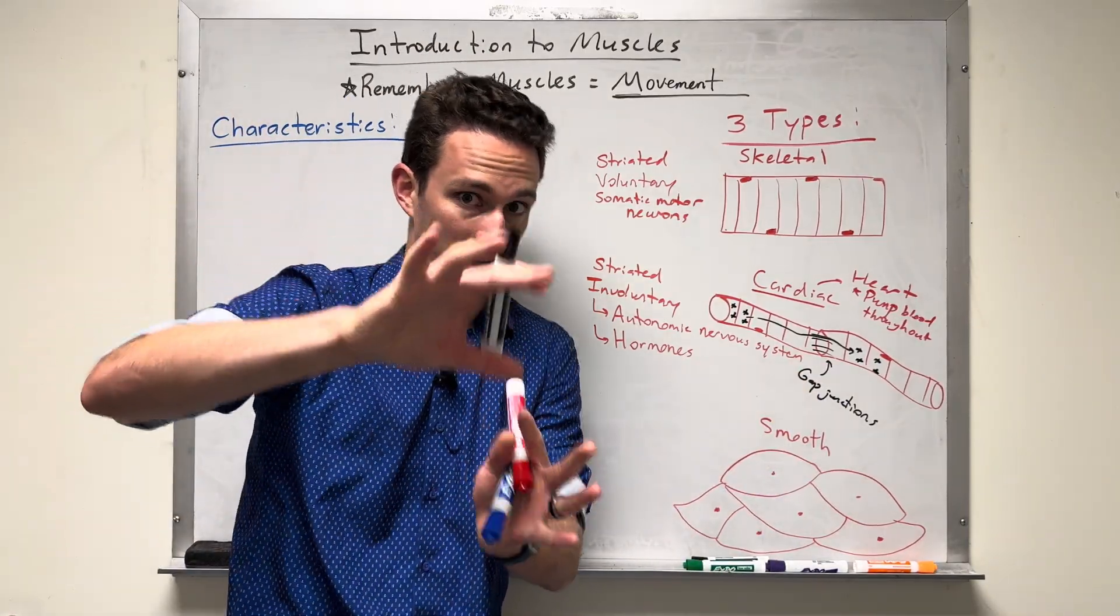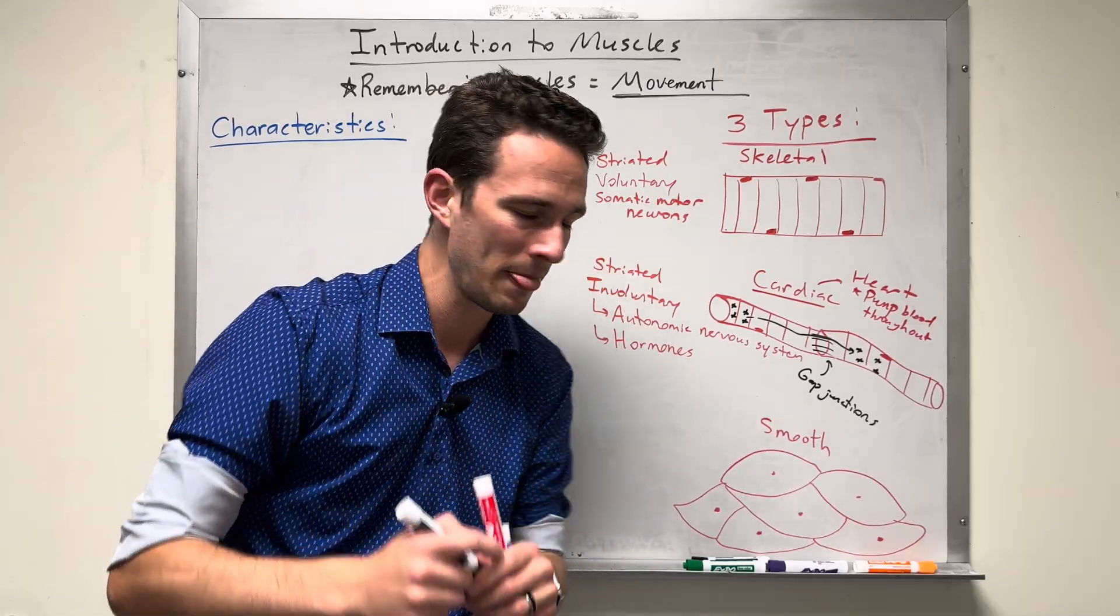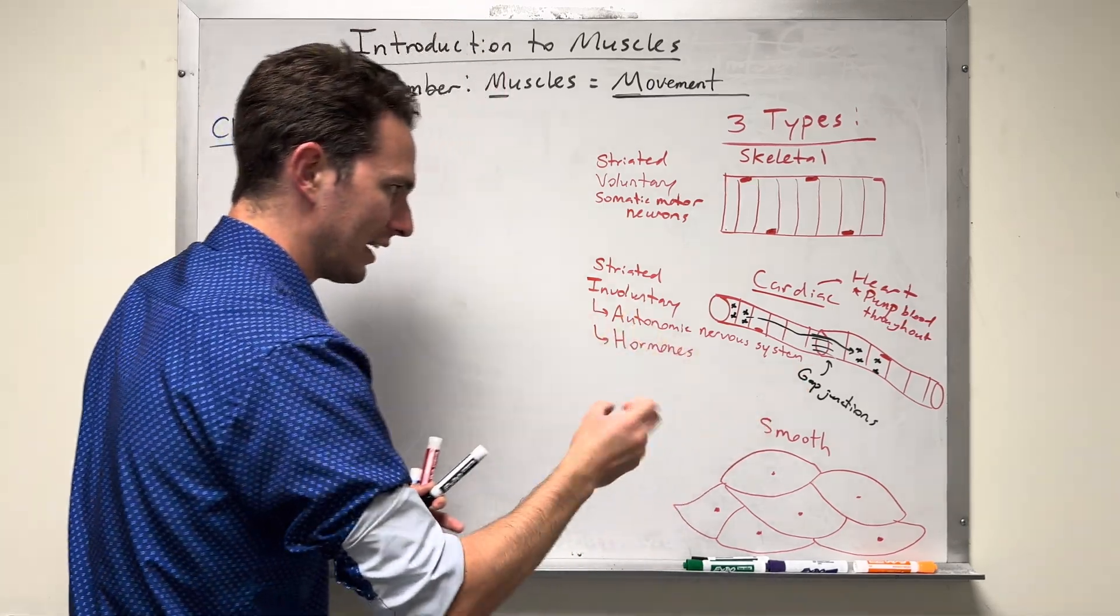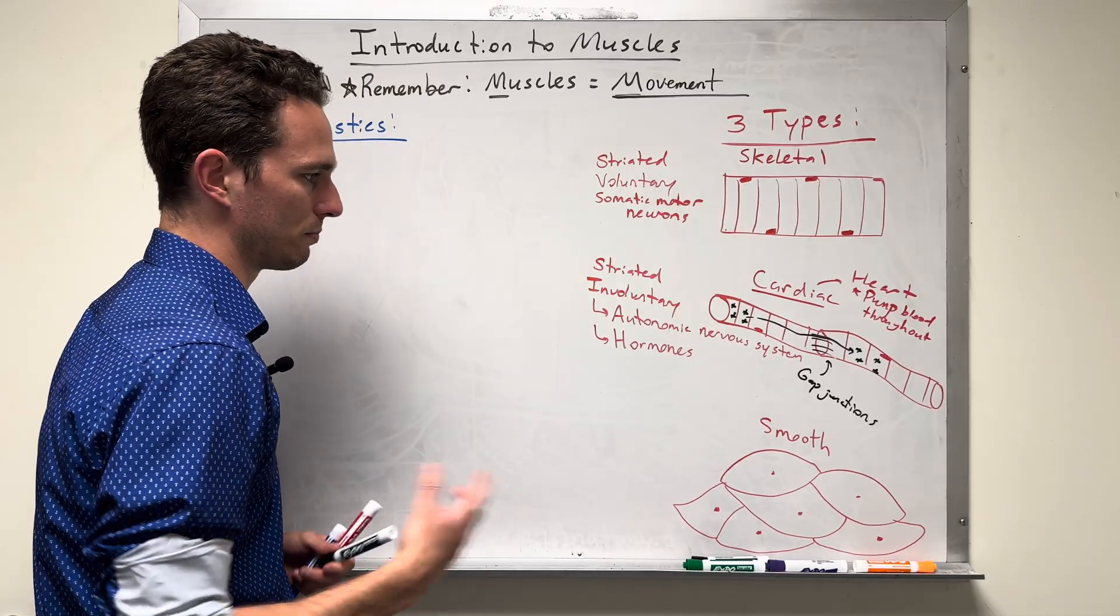That allows basically the entire heart muscle, whether atria or ventricle, to contract in a together manner, synchronously. So we call that autorhythmicity. Automatically beating, and we're beating the whole muscle together at one point by gap junctions.